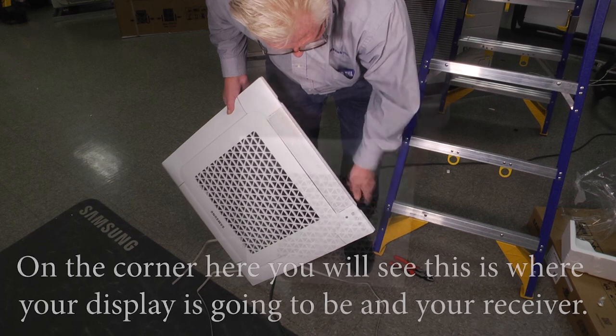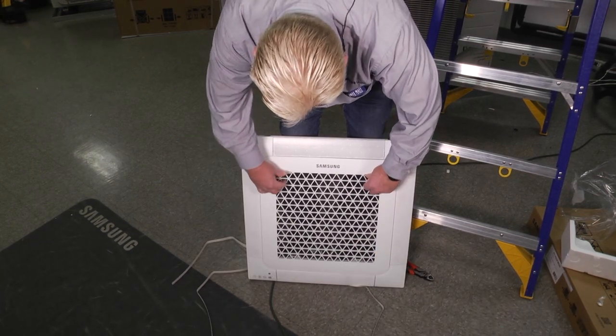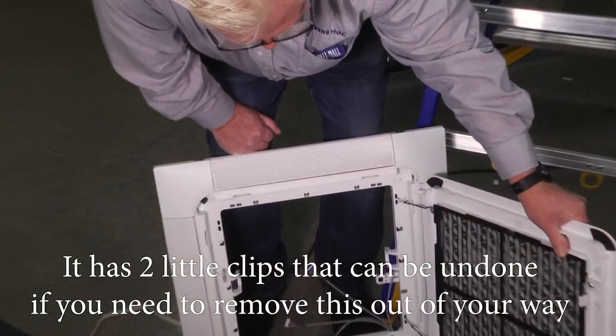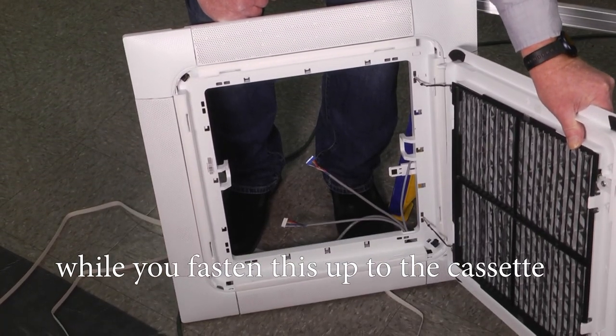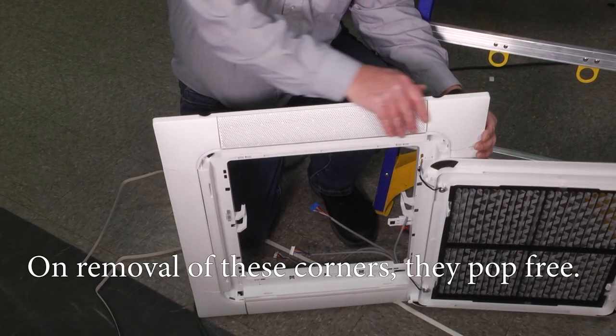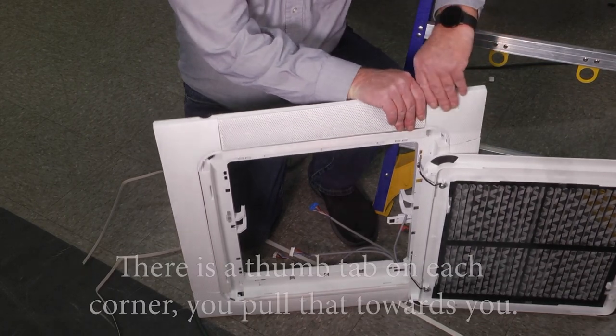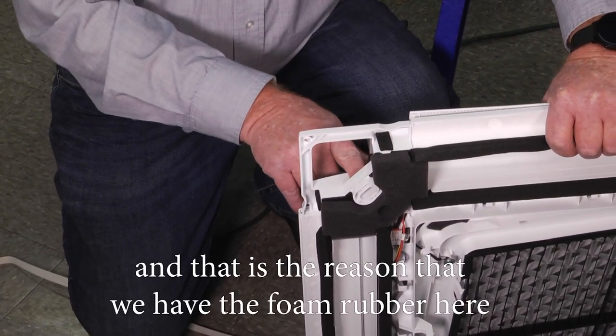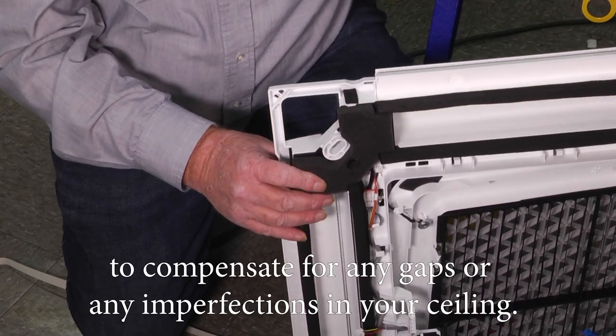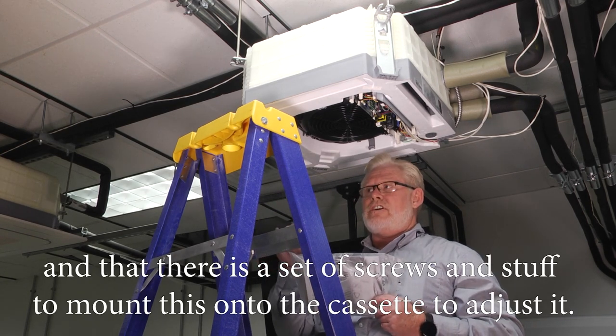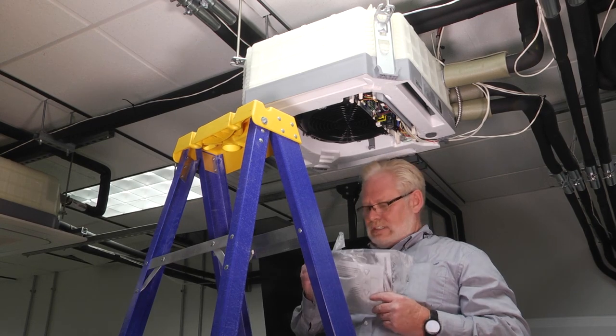Once we get it all unpackaged, you're going to want to remove the cover on the corners. Here you'll see this is where your display is going to be and your receiver. On the filter removal, you're going to pull the two clips down, this comes open. It's got two little clips that can be undone if you need to remove this out of your way while you fasten this up to the cassette and while you gain access to your control box to put your harnesses in. On removal of these corners, they pop free. There's a thumb tab on each corner you pull that towards you, the corners come loose. We have to do that on all four corners so that we can adjust this to our ceiling, and that's the reason why we have the foam rubber here to compensate for any gaps or any imperfections in your ceiling.